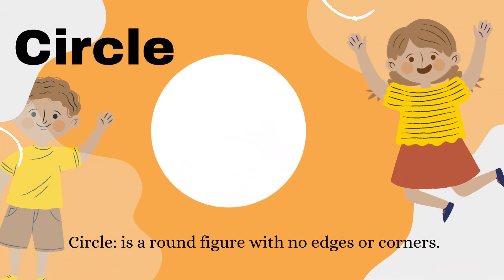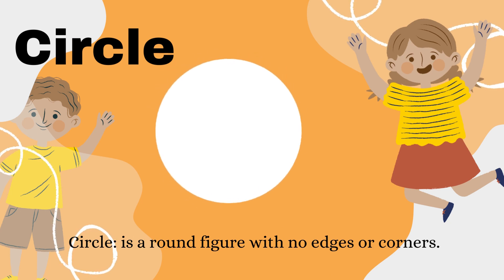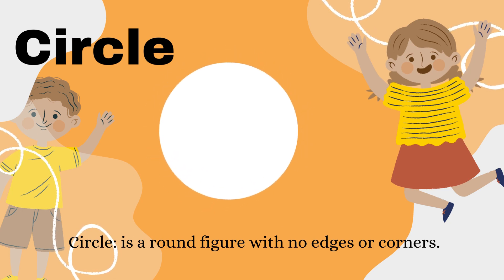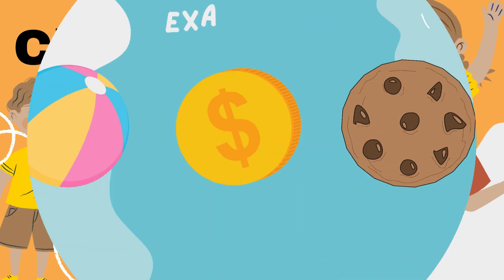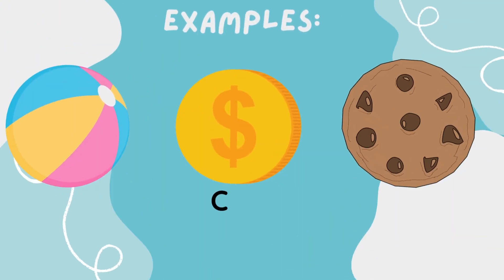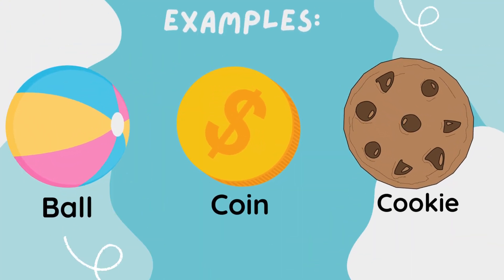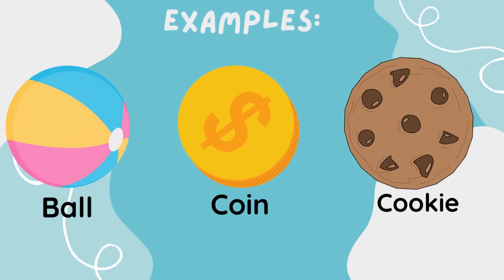Let's start with the circle. A circle is a round figure with no edges or corners. Here are some examples of things that are circular in shape: a ball, a coin, a cookie.